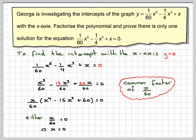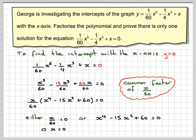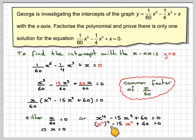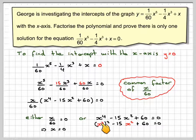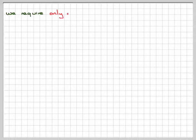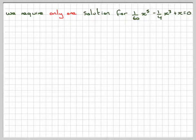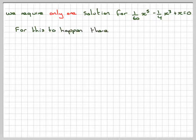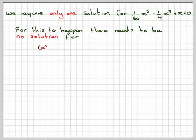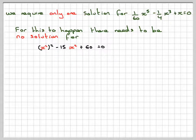Now we need to use algebra to show there is not going to be another solution. Taking the other factor, x⁴ - 15x² + 60 = 0. This is a quartic but you can rewrite it as (x²)² - 15x² + 60 = 0. You might recognise this as a disguised quadratic where the variable is x². For there to be only one solution overall, we need no solutions from (x²)² - 15x² + 60 = 0.